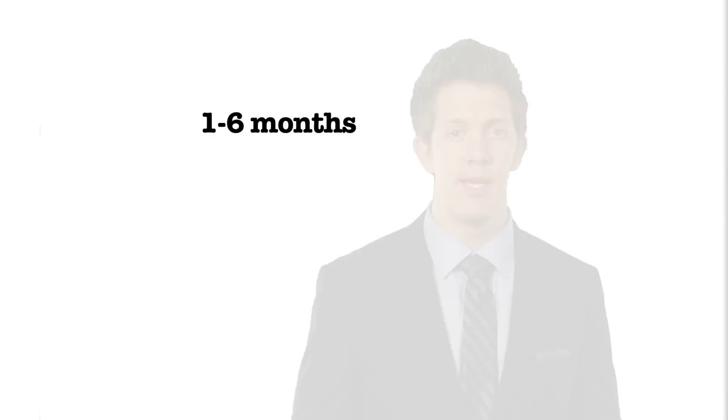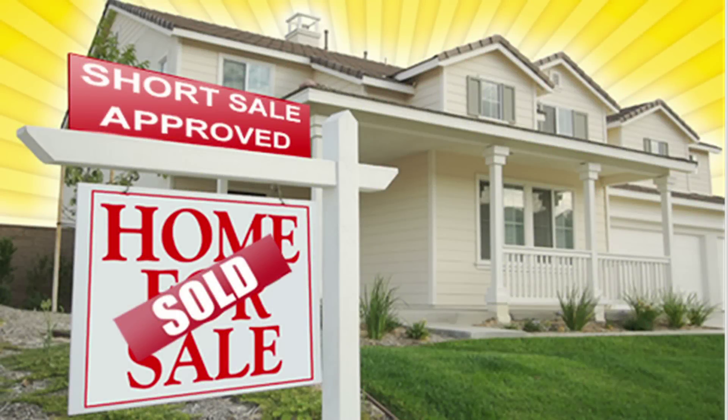A short sale can actually take on average one to six months. Banks have gotten a lot better at approving them in a timely manner, but you're still seeing time frames of about one to three months. Luckily, if a short sale has already been approved, the time frame drops down to about two or three weeks, which isn't nearly as long.